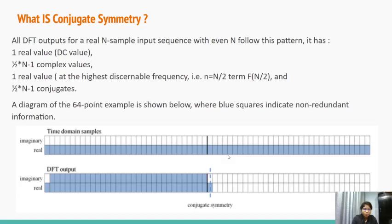All DFT outputs for a real N sample input sequence with even N follow the pattern that the output is one real value, that is the DC value, capital N by 2 minus 1 complex values, another real value, that is at the highest discernible frequency, which is the small n equals capital N by 2 term, and capital N by 2 minus 1 conjugates. A diagram of the 64 point example is shown below, where the blue squares indicate non-redundant information. Please take a look at it.